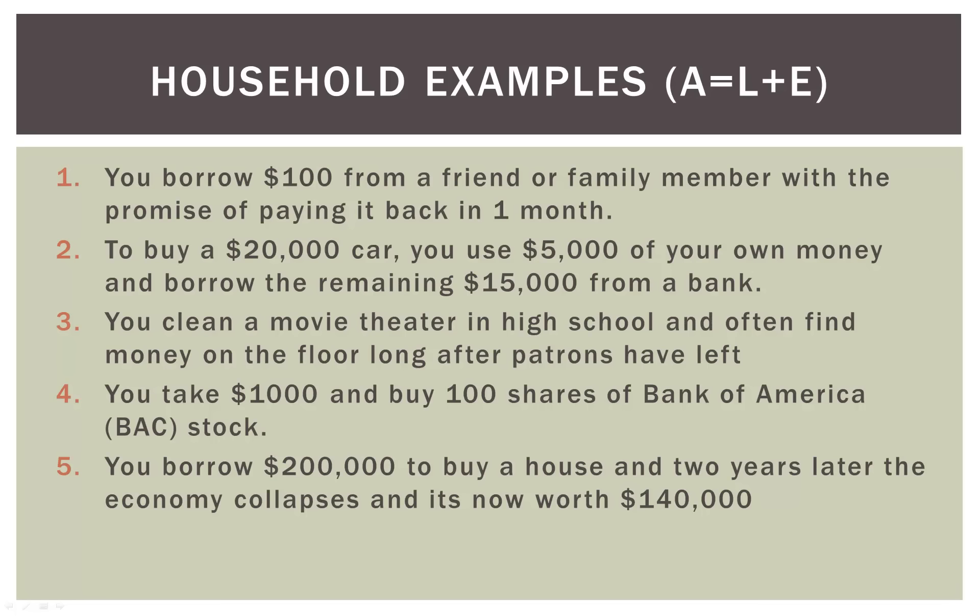How does that relate to our equation? We borrow $100, so we now have $100 of cash — and cash is a type of asset. However, we have to pay that back at some point, so we also have a $100 liability. The simple act of borrowing a hundred bucks from someone plays right into the fundamental accounting equation: $100 in assets on the left and $100 liability on the right.